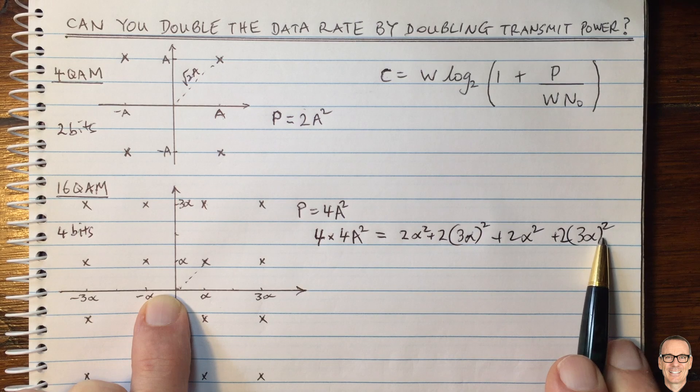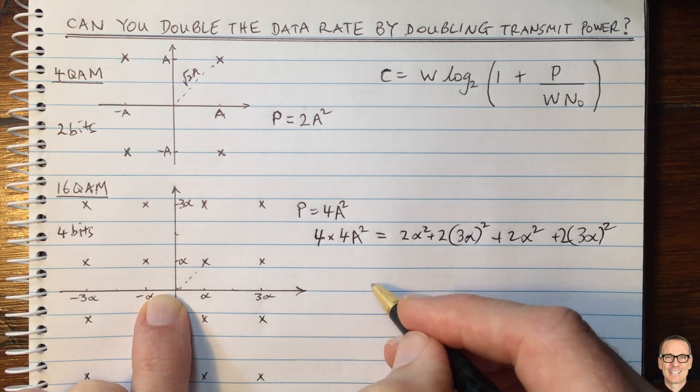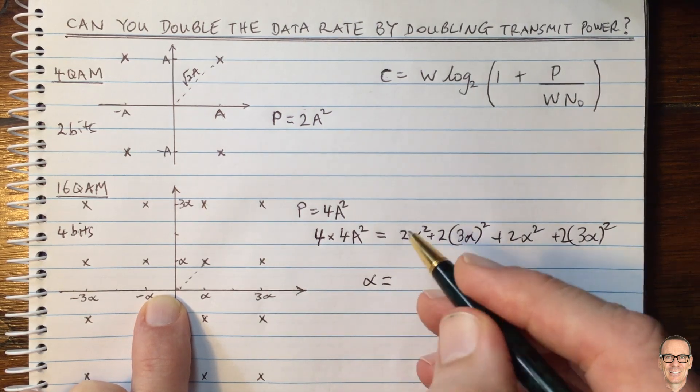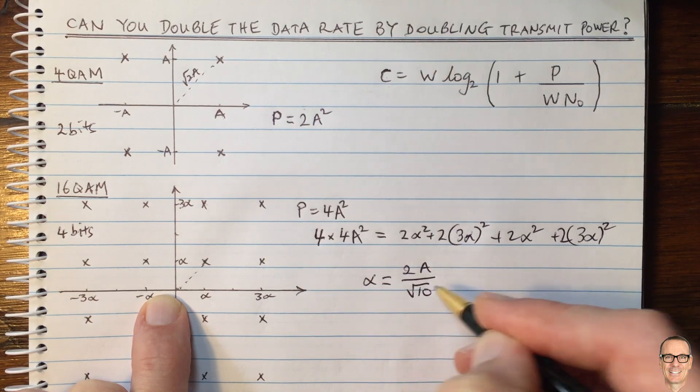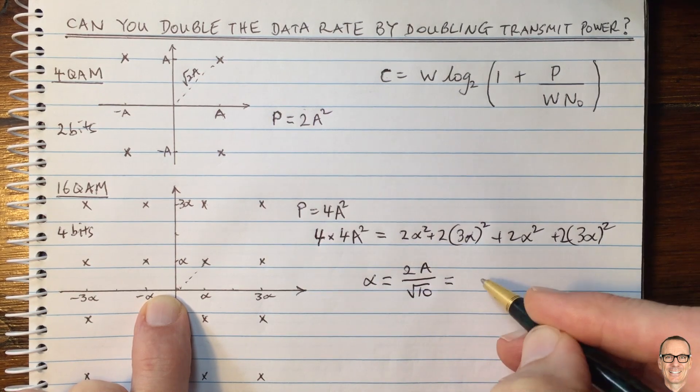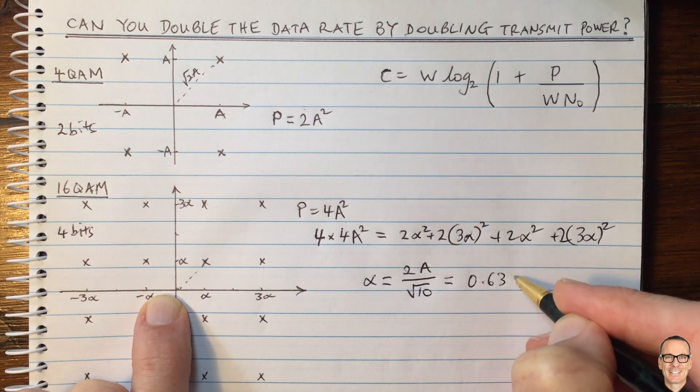So now we can solve this equation for alpha. And we'll find out that alpha equals 2a divided by the square root of 10, which equals 0.63a.